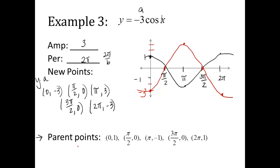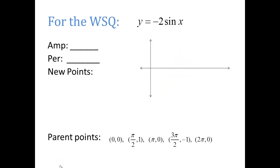Alright. That's what the negative will do. Alright. For the WSQ, I want you to try one. Alright. I've even put the parent function points down here for you to reference. Find amplitude, find period, find the new points. And I do want you to sketch it out. Remember, do the parent function first. Then the transform function here. Alright. We'll talk about this in class. And good luck. Thank you.